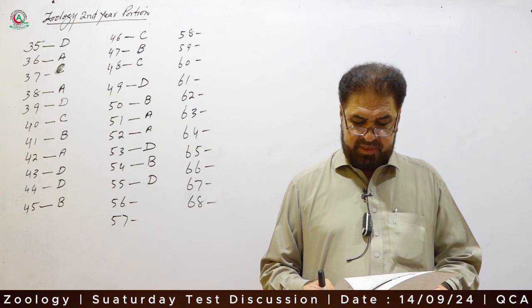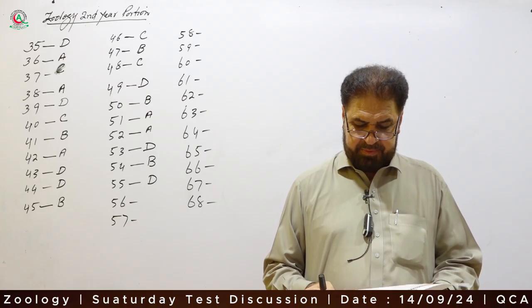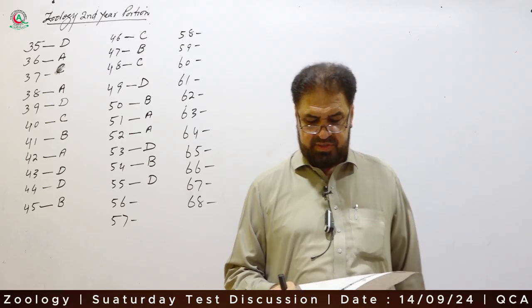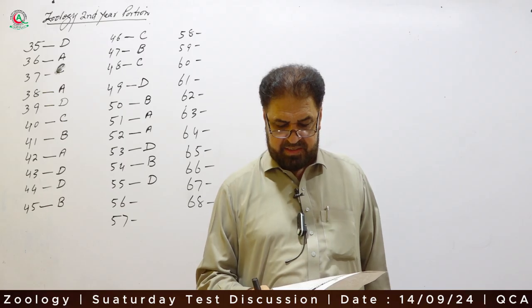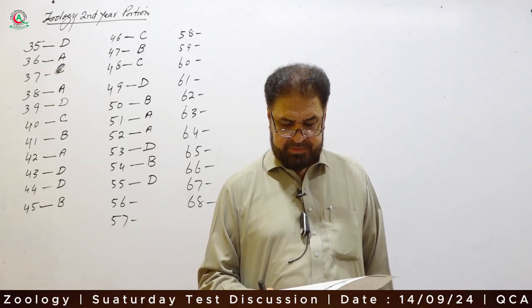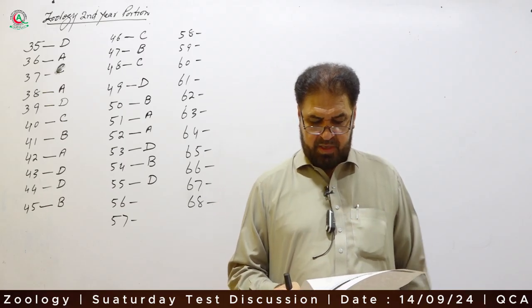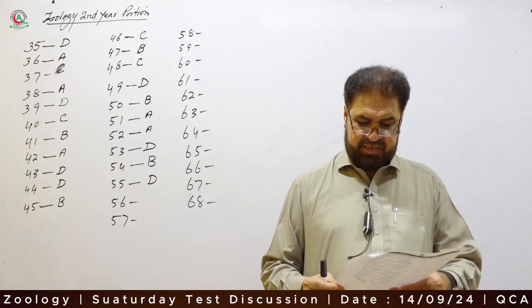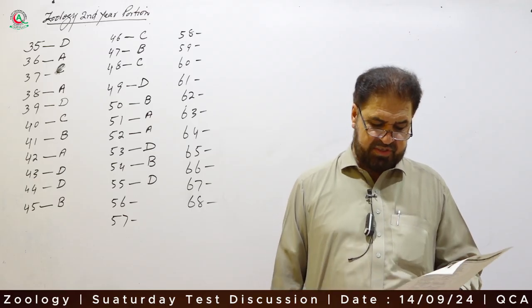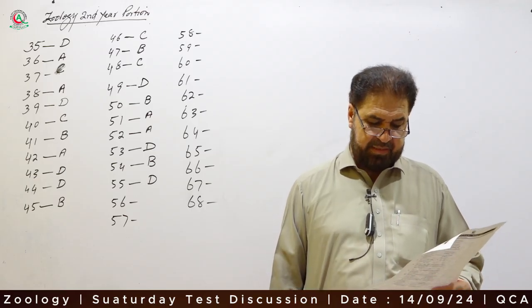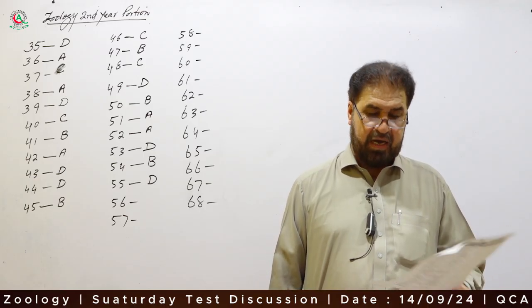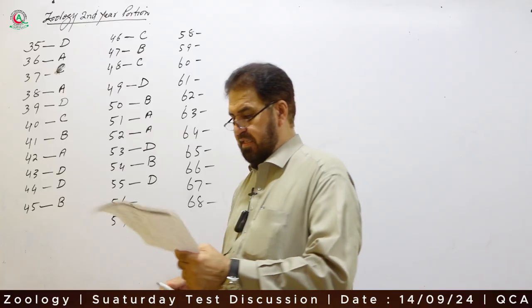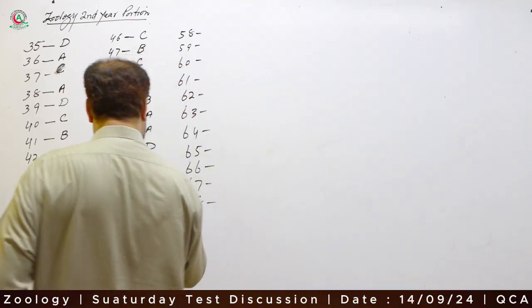Question 56: Goblet cell is an example of a unicellular exocrine gland. Option B is correct. Goblet cells, or mucus gland cells, are examples of unicellular exocrine glands.